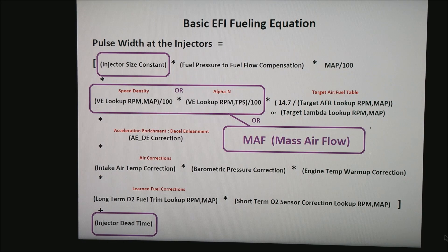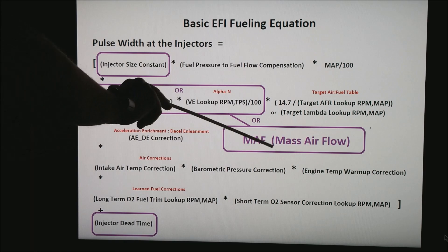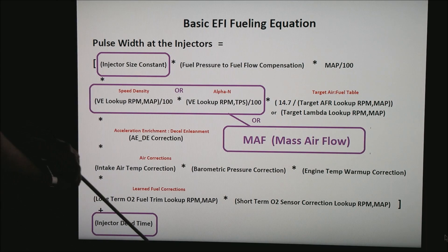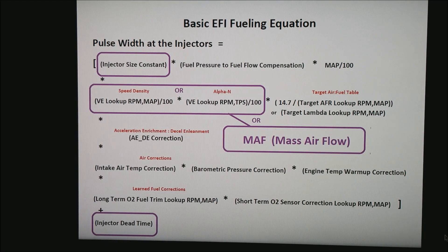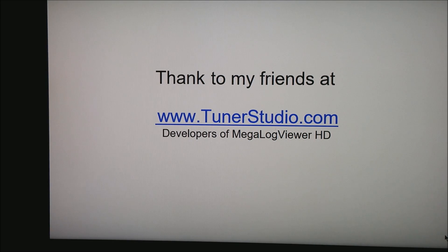The pieces of the calculation I have boxed in purple are the most critical calculations that cannot be ignored: the injector size constant, your choice of speed density, alpha-N, or mass airflow, and injector dead time. All the rest of these terms, depending on how you have the code set up, essentially drop to a value of 1. I want to thank my friends at tunerstudio.com, the developers of Megalogviewer HD — the software I use to tune most of these motors. Once you understand the pieces of the fuel equation, it gets far easier to interpret what your data logs are telling you. Thank you for watching, and please hit subscribe on my YouTube channel.